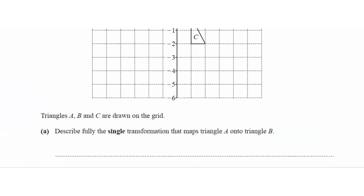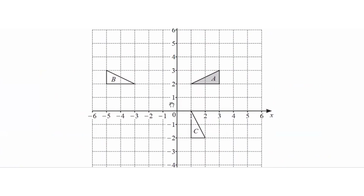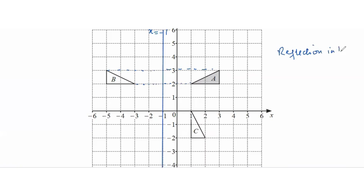Question 16: triangles A, B, and C are drawn on the grid. Describe fully the single transformation that maps triangle A onto B. Both triangles are equal in size with no change in direction — they are opposite, so this is a reflection. Drawing a line at x equals negative 1, there's a symmetric difference of units on both sides. So A is reflected in the line x equals negative 1 to get triangle B.